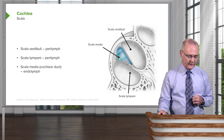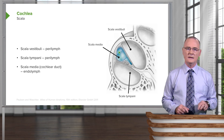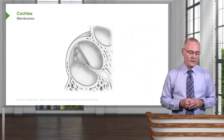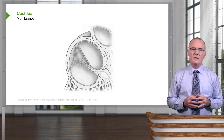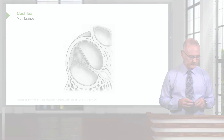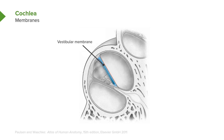The stria vascularis is shown here on this aspect of the scala media. The scalae are separated from one another by membranes. This membrane separating the scala vestibuli from the scala media is aptly termed the vestibular membrane, shown here in blue. The membrane separating the scala media from the scala tympani is the basilar membrane, also shaded in blue.